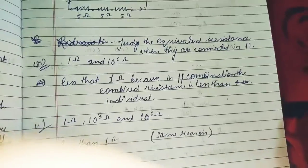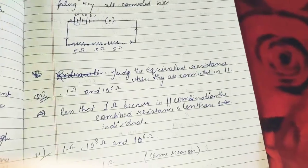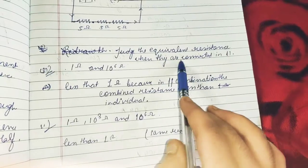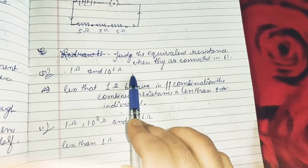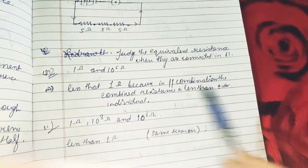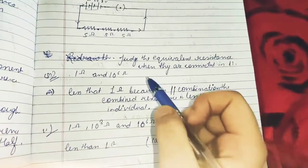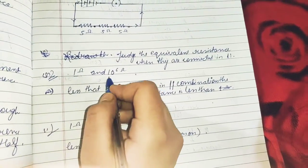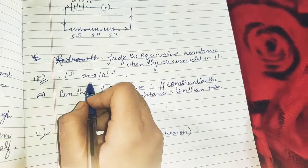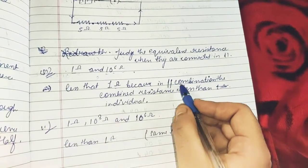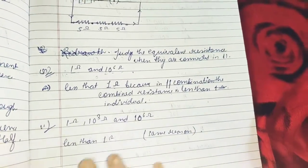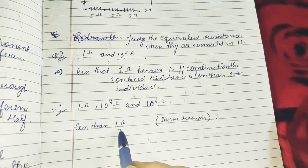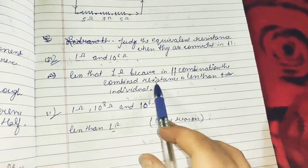Judge the equivalent resistance when resistors are connected in parallel. For one ohm and ten to the power six ohm in parallel — in a parallel combination, the combined resistance is less than the individual resistances. So the equivalent resistance will be less than one ohm. For one ohm, ten to the power three ohm, and ten to the power six ohm in parallel, it will also be less than one ohm, for the same reason.